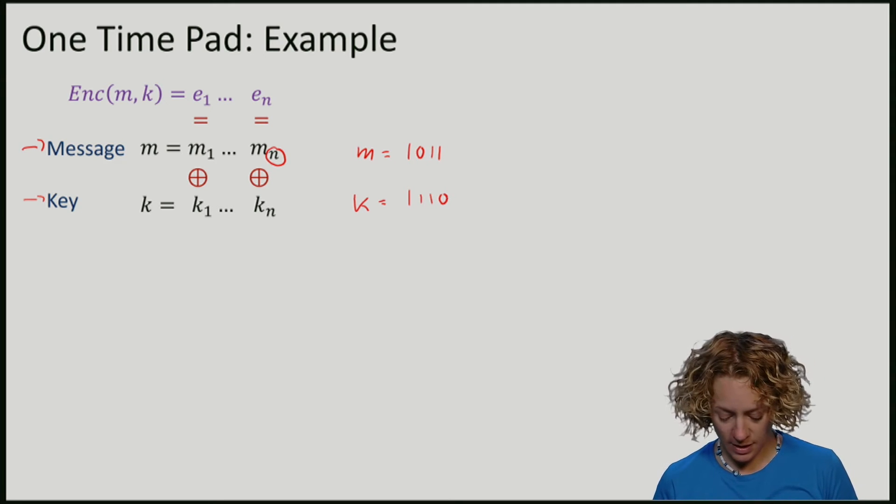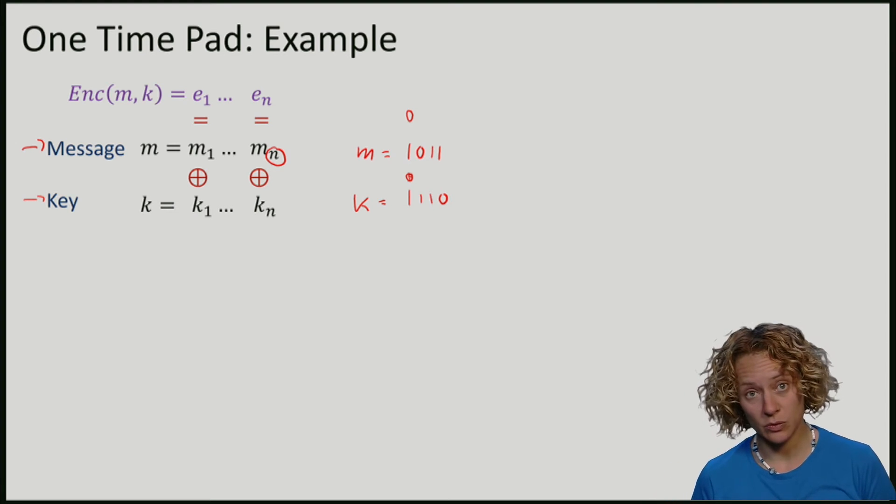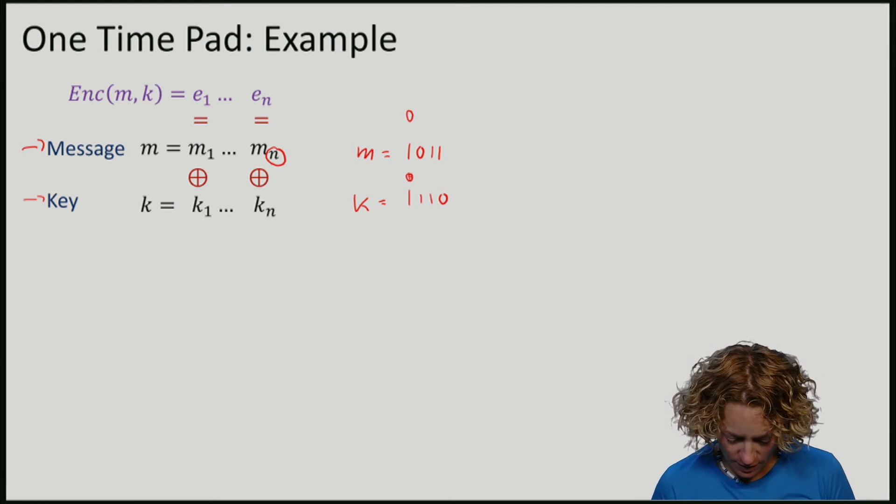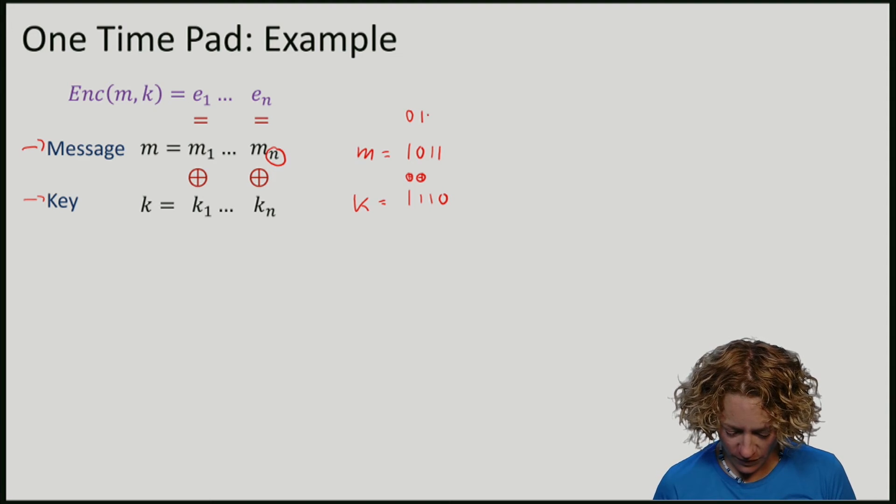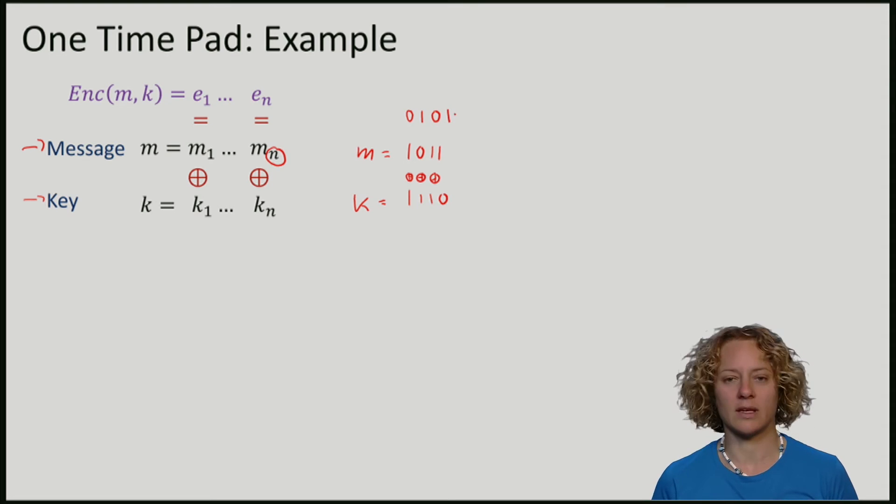then computing the XOR of these two bits, the first one gives me 0. 1 XOR with 1 gives 0, the second one gives me 1. 1 XOR with 1 gives me 0. 1 XOR with 0 also gives me 1.